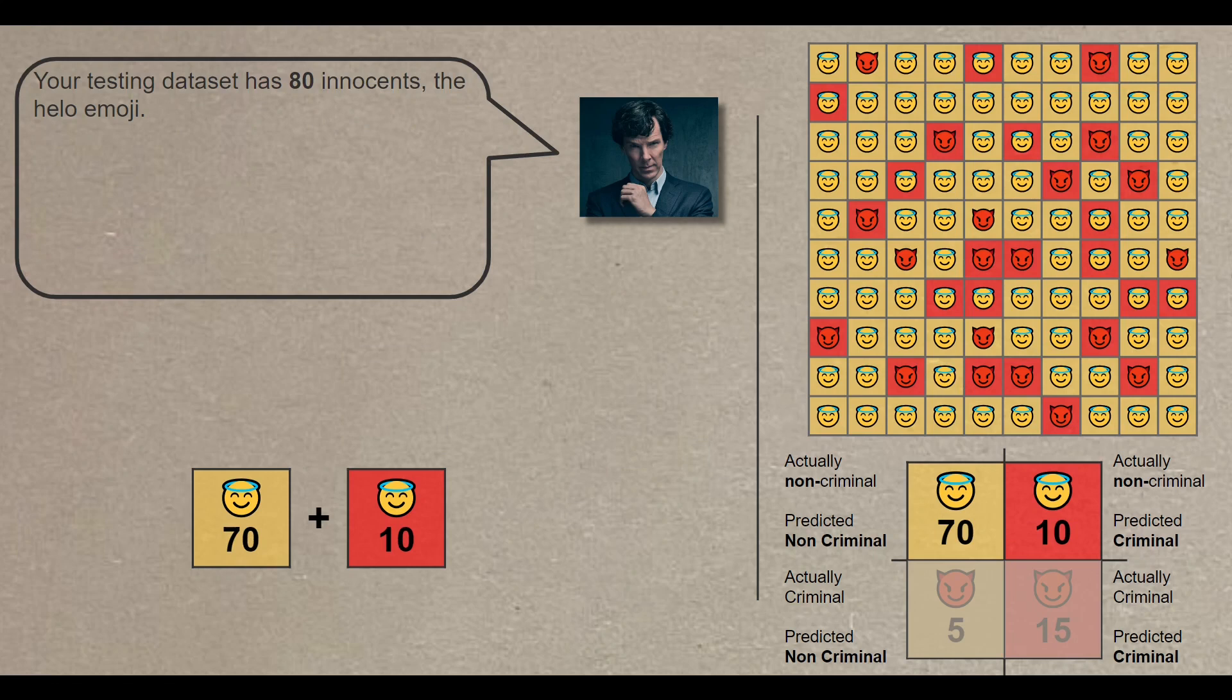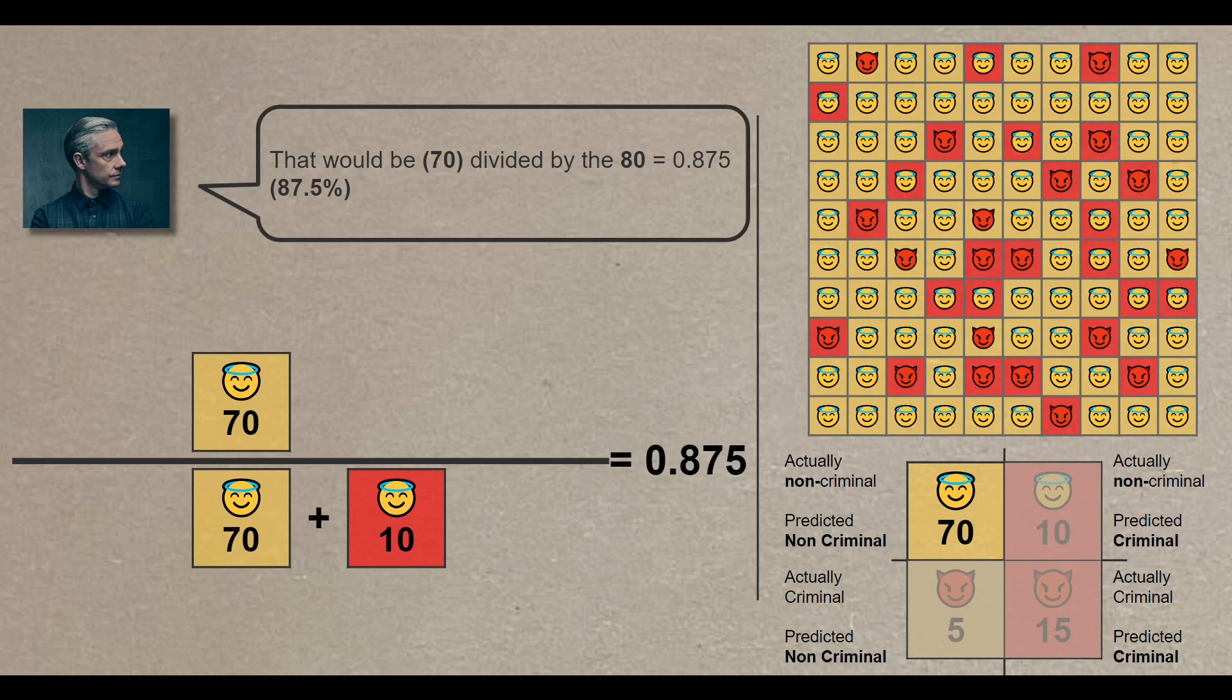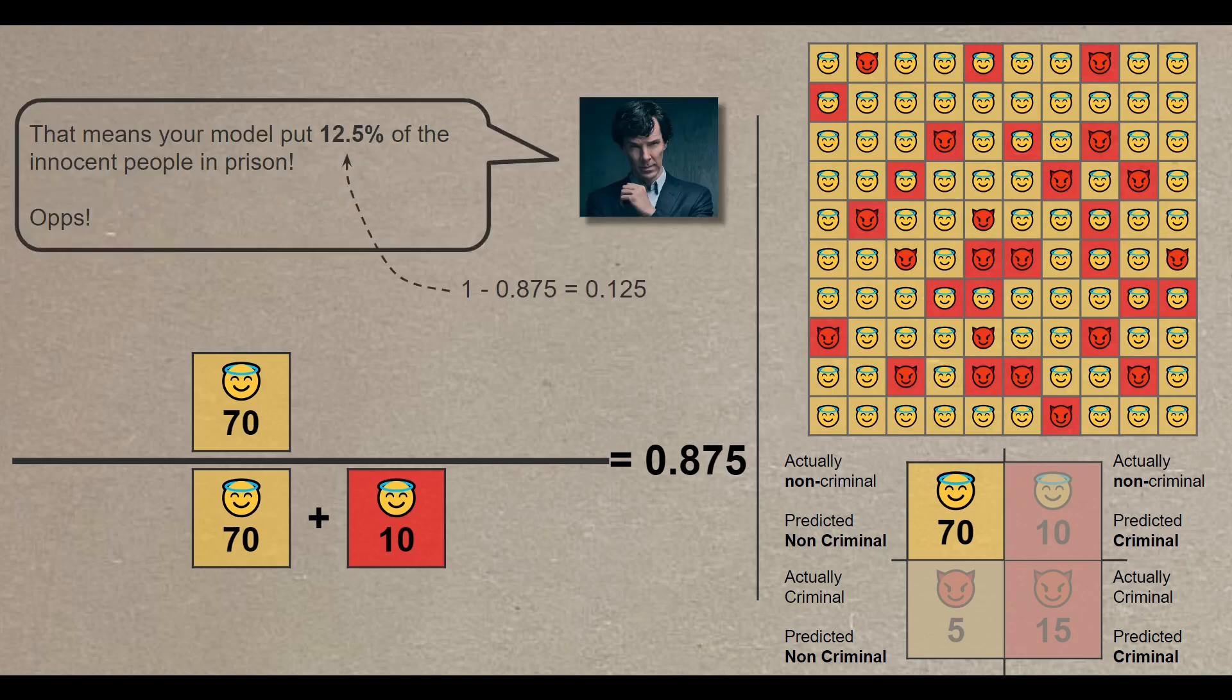The third thing you need to assess is the specificity of your model. Your testing dataset has 80 innocent people in it, the halo emojis. To assess the specific ability of your model to correctly classify innocents, you need to ask the following question. Of all these 80 innocents, how many were correctly classified? That would be 70 divided by 80 and that will give me 87.5%. That means your model got 12.5% of innocent people in prison. Oops.